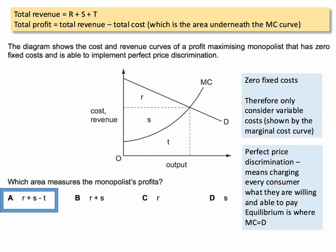But profit, of course, is revenue minus cost. Total cost will be the area underneath the marginal cost curve — because the marginal cost curve is the change in total cost from each extra unit produced, so the area underneath it equals total cost. Therefore, profit is revenue minus cost: R plus S minus T gives you the profit of this business.